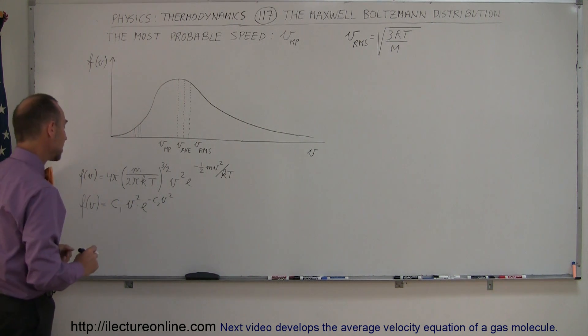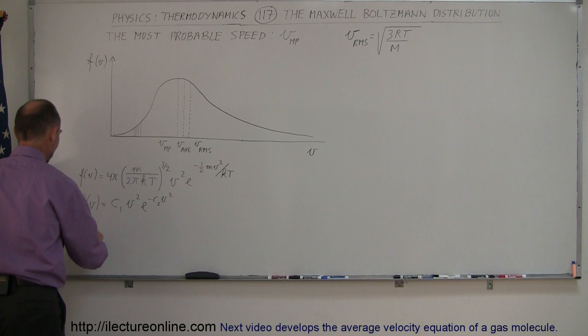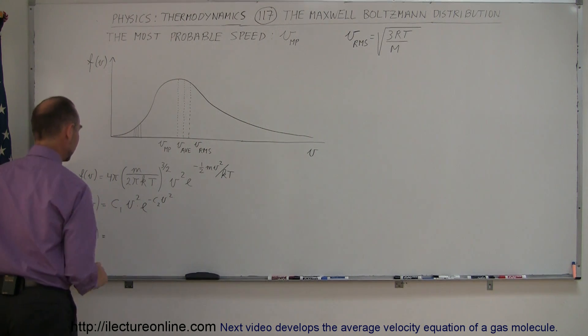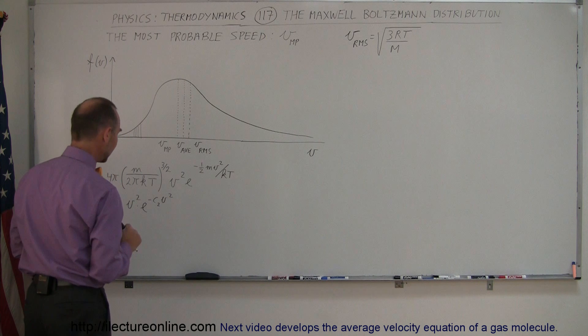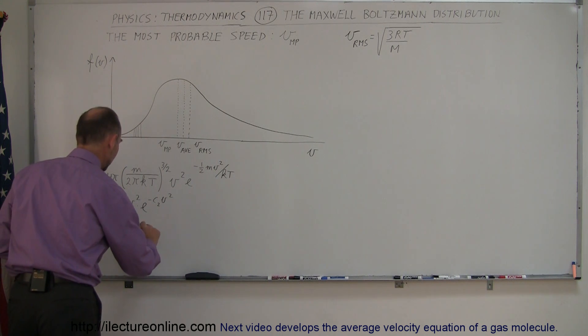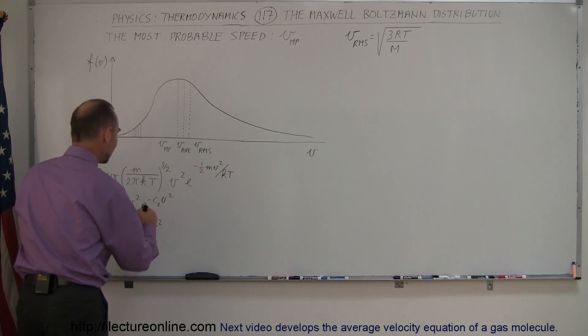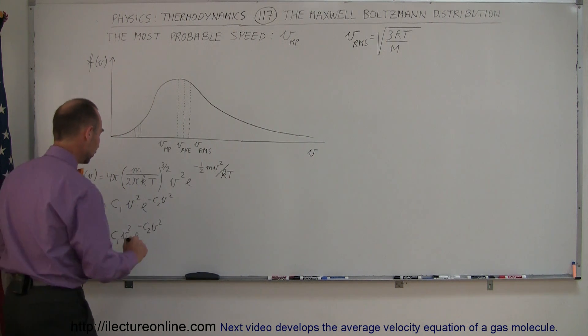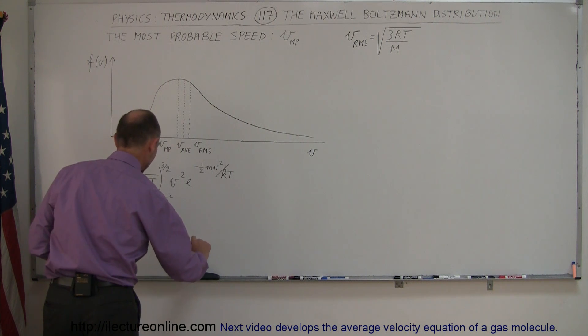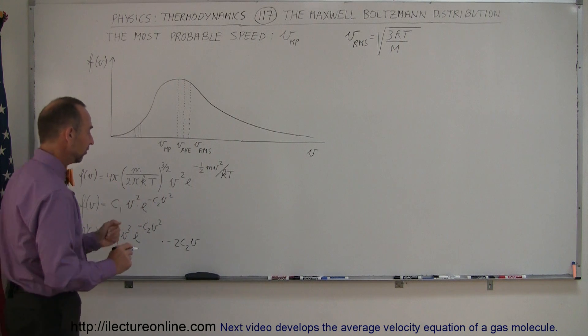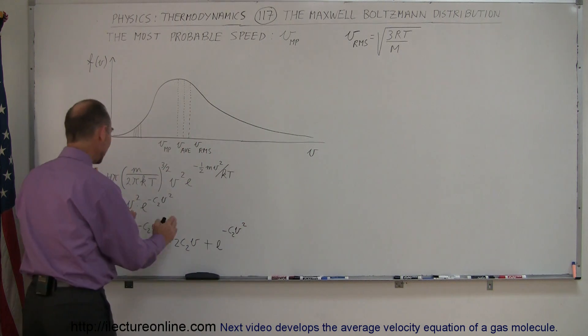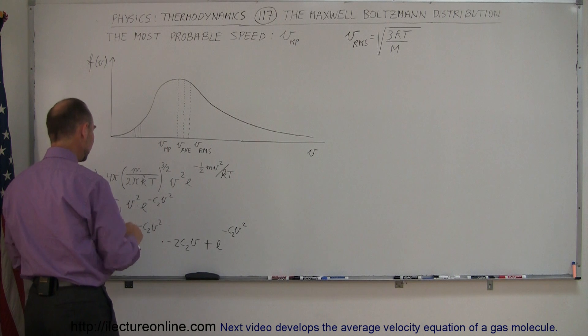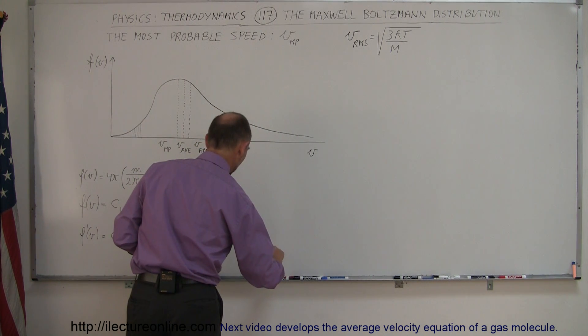And of course, we have a product right here, and we can very much, well, much more easily, I should say, find the derivative of this function. So now we take f prime of v is equal to, so we have the first times the second, so we have the first, c1 v squared, times the derivative of the second. So since there's an exponential, we repeat that, e to the minus c2 v squared, times the derivative of the exponent, so times minus 2 c2 v, plus the second, which is e to the minus c2 v squared, times the derivative of the first, which would be 2 c1 v, so times 2 c1 v.